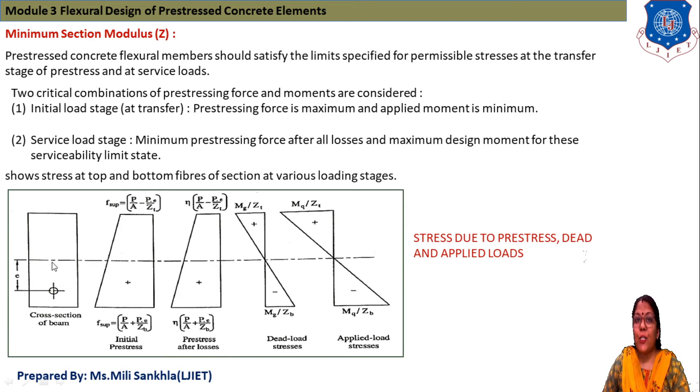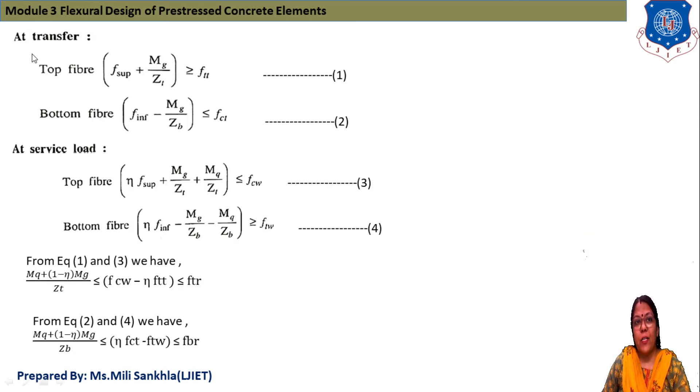This is the rectangular cross-section of beam. At initial pre-stress condition, it is subjected to self-weight and stress due to pre-stressing force. Second is pre-stress after losses η. Dead load stresses diagram and live load stresses diagram. At transfer condition, top fiber: F_inf - MG/ZT ≥ FTT. Bottom fiber: F_inf - MG/ZB ≤ FCD. This is equation 1 and 2 for transfer condition.